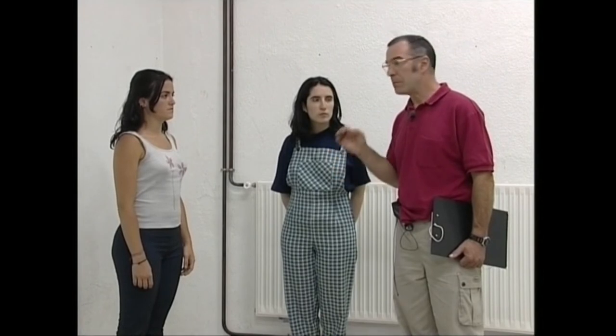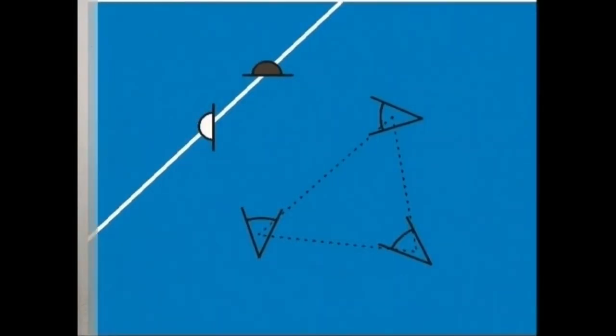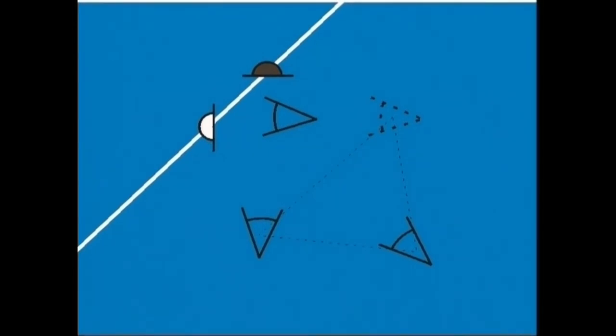Aktoreak larogeita hamar graduko angeluan edo ele bat osatuz daudenean, zer egin behar dugu banan-banan hartzeko. Aukeratu dugun aktorearen aurrean dagoen kamera aurrera eramango dugu zuzen kuadroan aktorea bakarrik gelditu arte. Aurreratze hau kamera mugituz edo objektibo aldatuz lor daiteke.